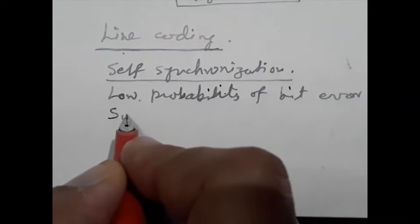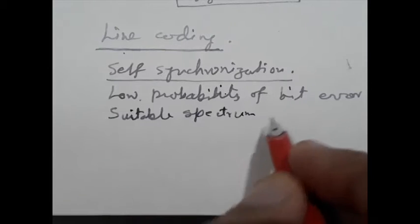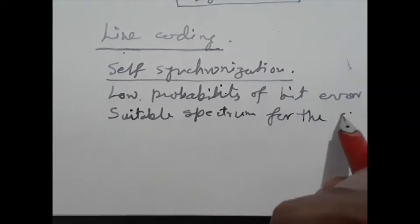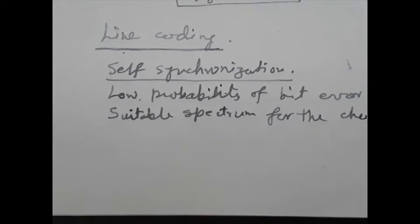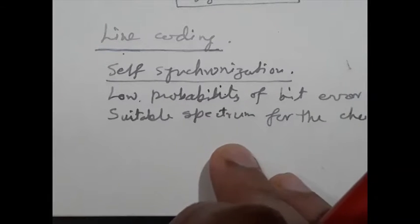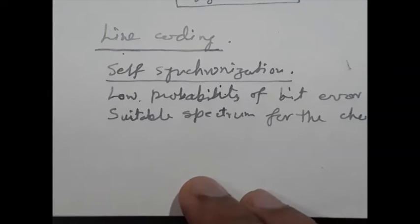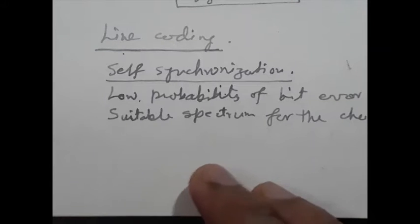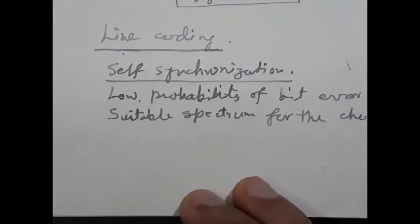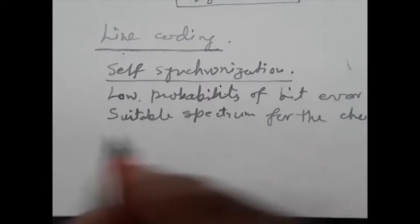Next is suitable spectrum. The properties of different channels differ in terms of coupling and bandwidth. The line coding must be compatible with the properties of the channel. For example, if the channel is AC coupled, the power spectral density of the line code should be negligible at frequencies near zero. Also, the bandwidth of the signal needs to be sufficiently small compared to the channel bandwidth to avoid ISI or inter-symbol interference.